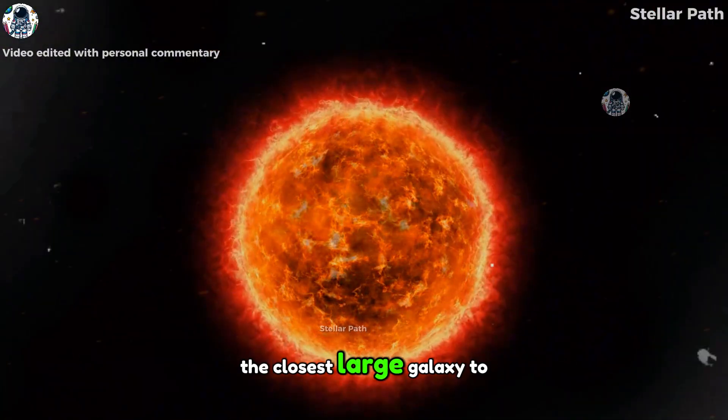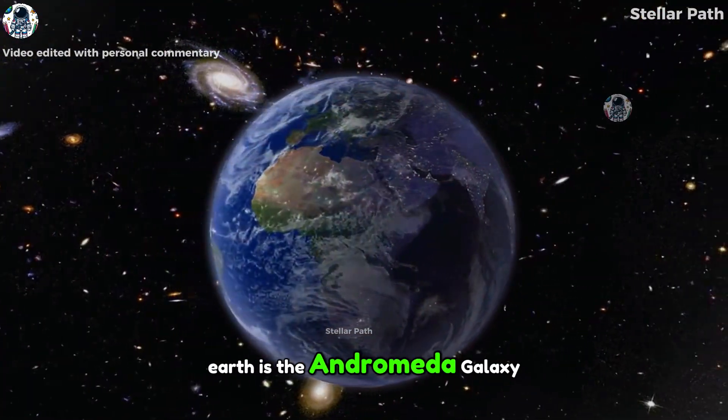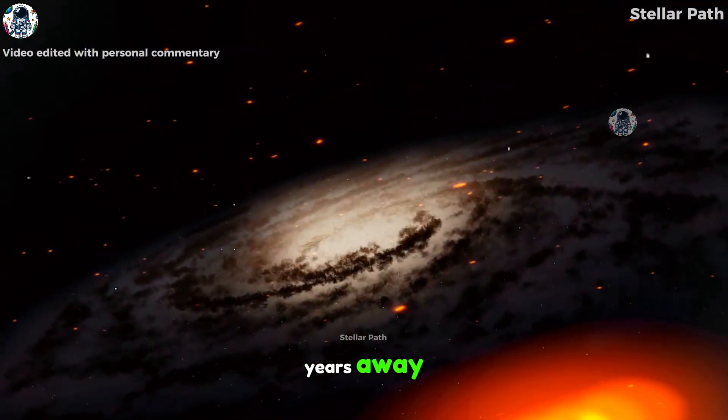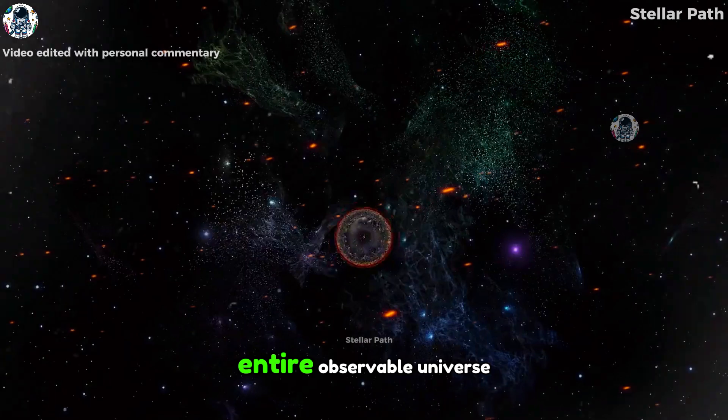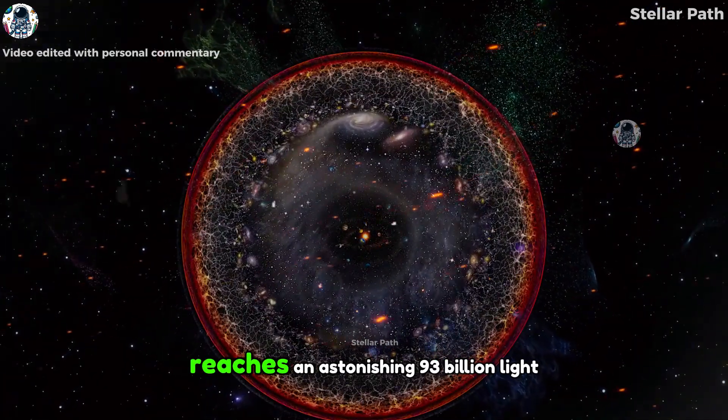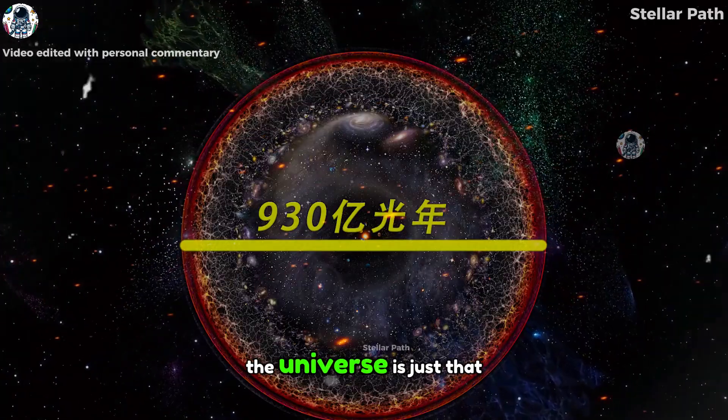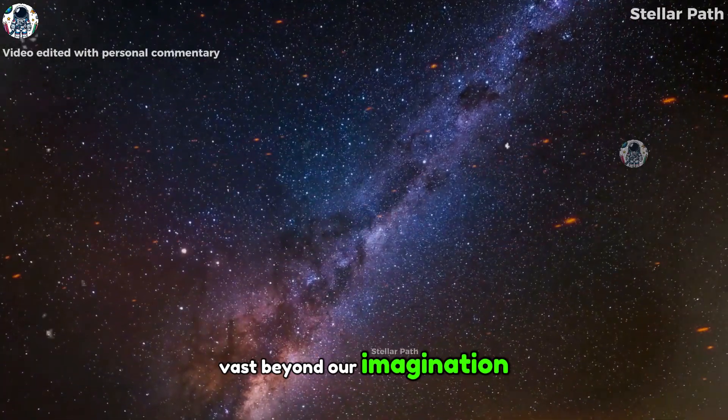The closest large galaxy to Earth is the Andromeda galaxy, about 2.54 million light years away, and the diameter of the entire observable universe reaches an astonishing 93 billion light years. The universe is just that vast beyond our imagination.